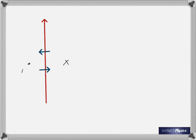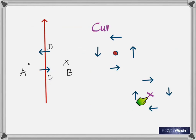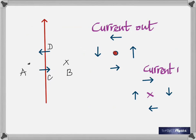Looking at the diagram: if the current through the conductor is out of the plane of the board, you can make out that the field directions are given by the right-hand grip rule. What if the current is flowing into the plane of the board? Then use this rule the other way. There's surely going to be one question on the direction of currents and the magnetic fields.